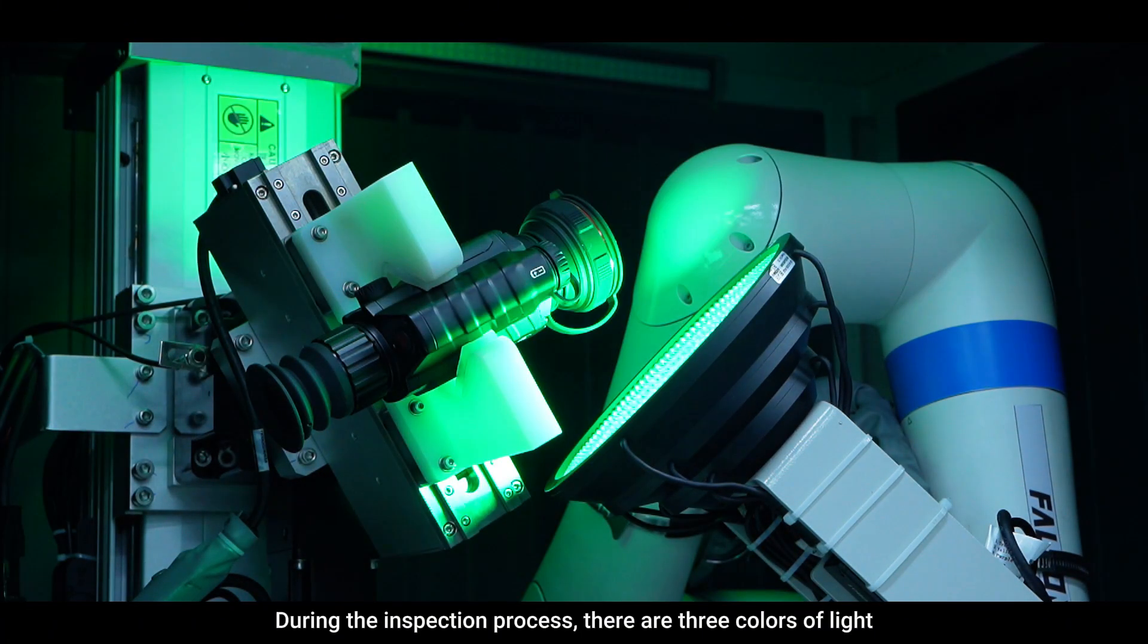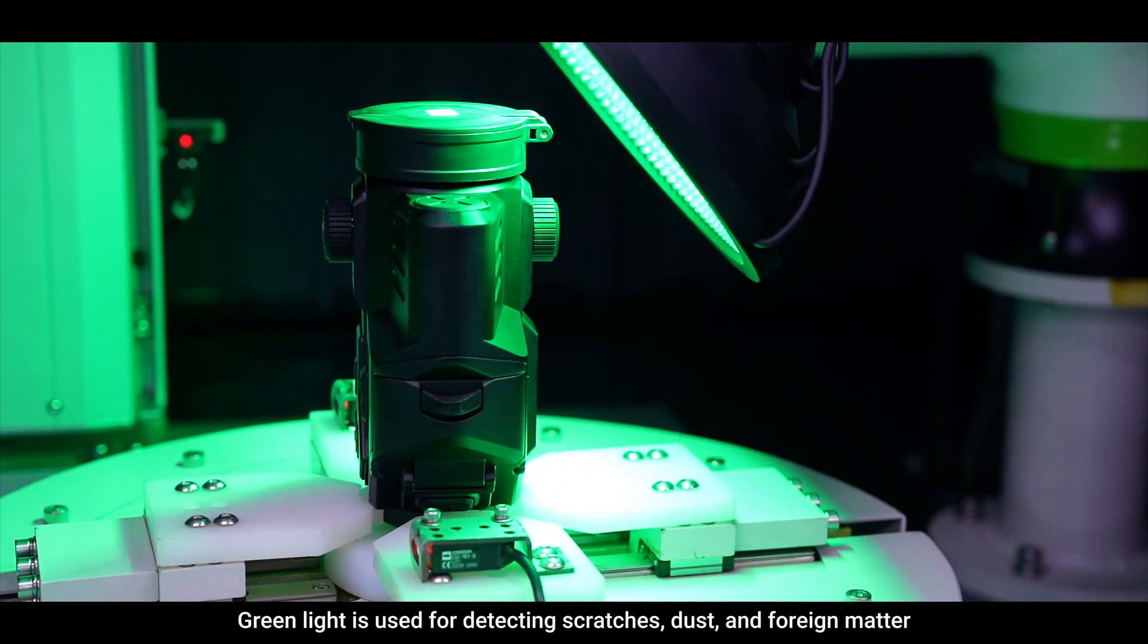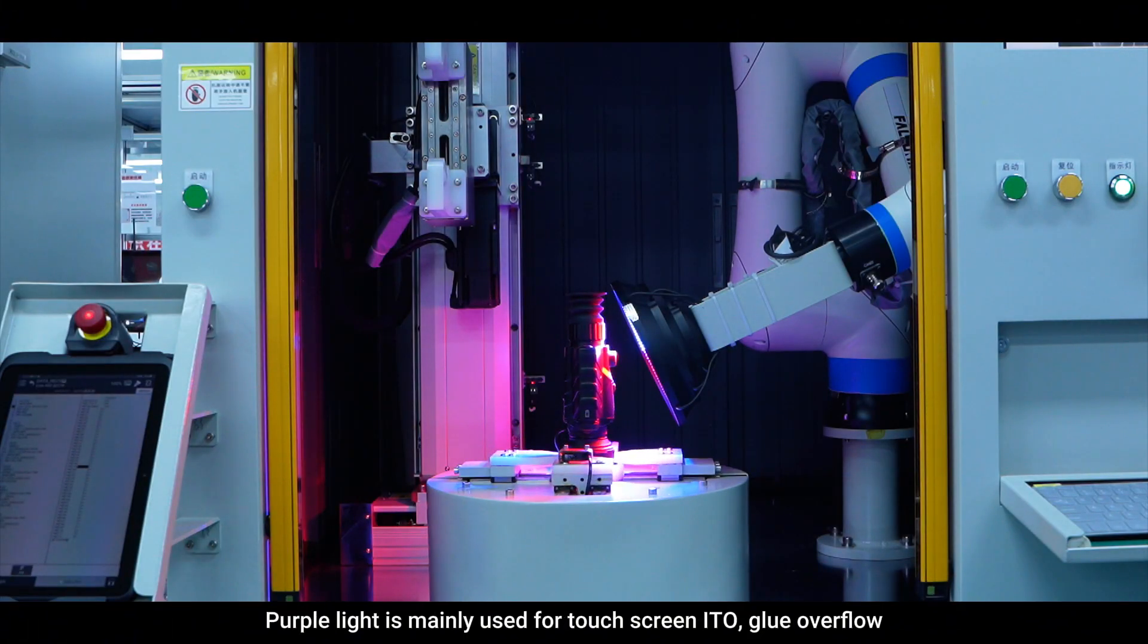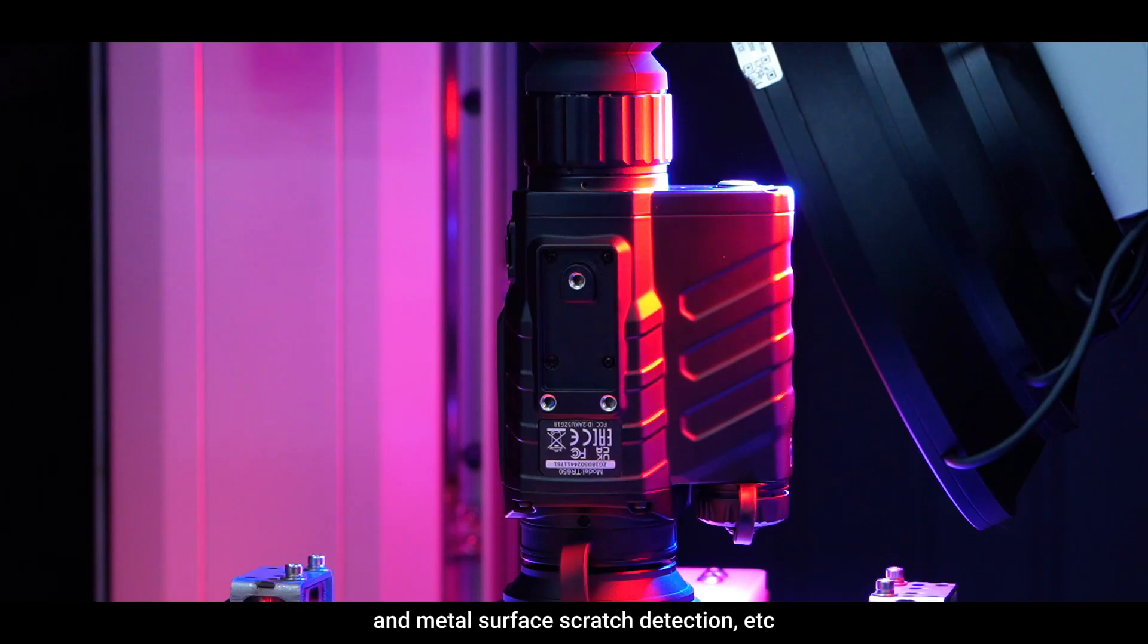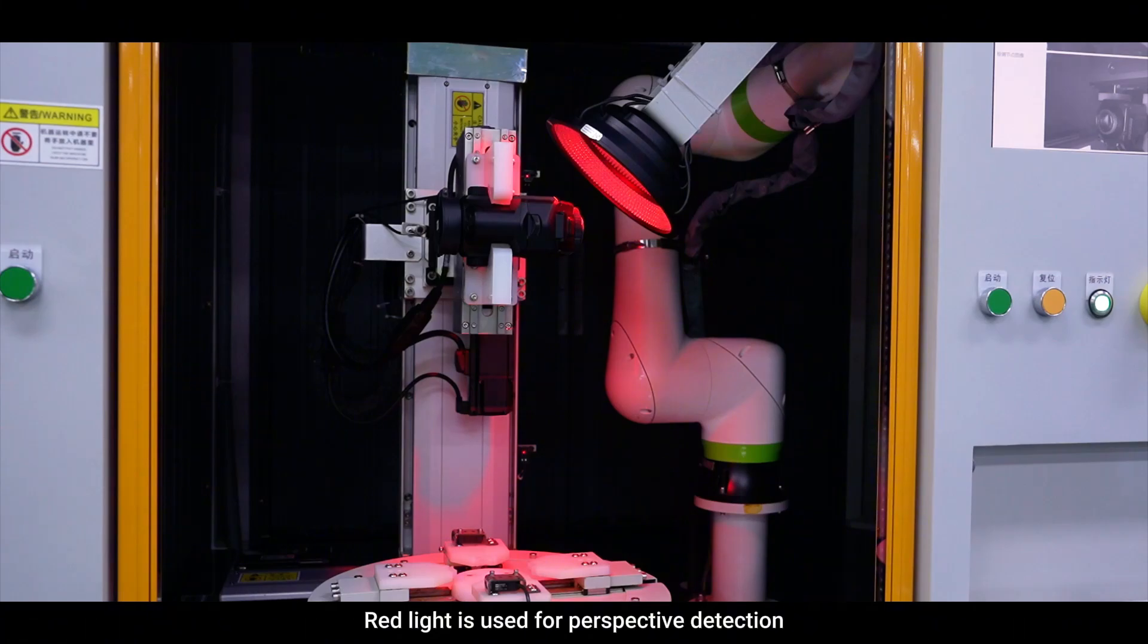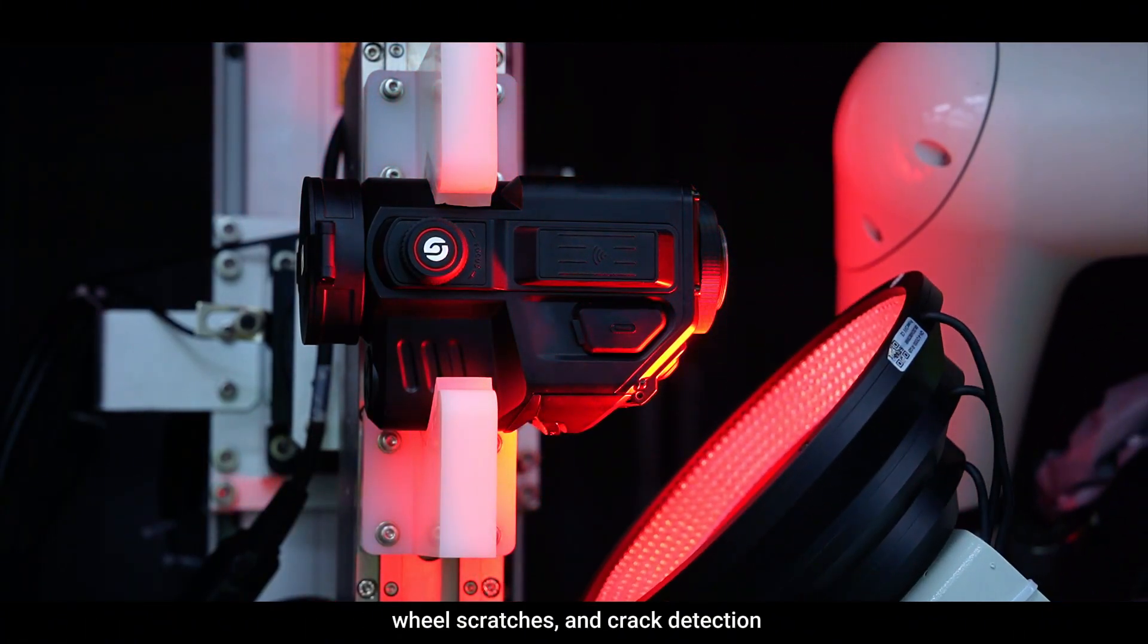During the inspection process, there are three colors of light. Green light is used for detecting scratches, dust, and foreign matter. Purple light is mainly used for touch screen ITO, glue overflow, and metal surface scratch detection. Red light is used for perspective detection, wool scratches, and crack detection.